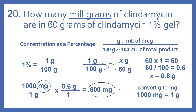Our answers are in milligrams, so now we have to convert to milligrams. There are 1,000 milligrams per 1 gram, times 0.6 grams. That leaves us with milligrams on the top; grams cancel — one on the top, one on the bottom. And that gives us 600 milligrams.